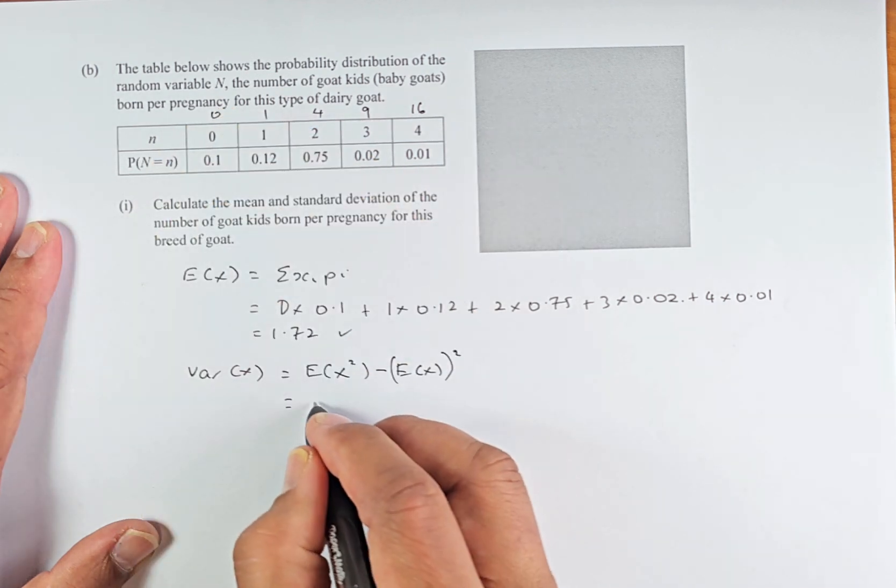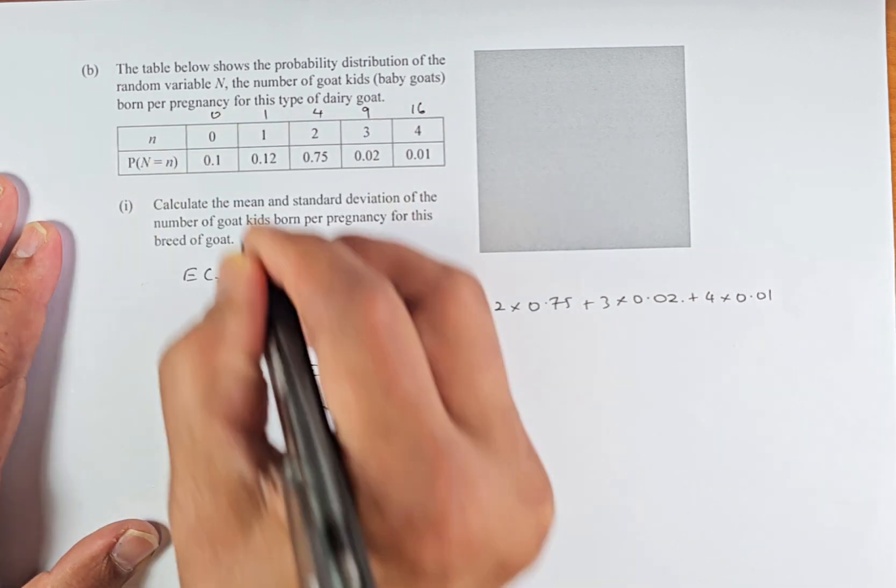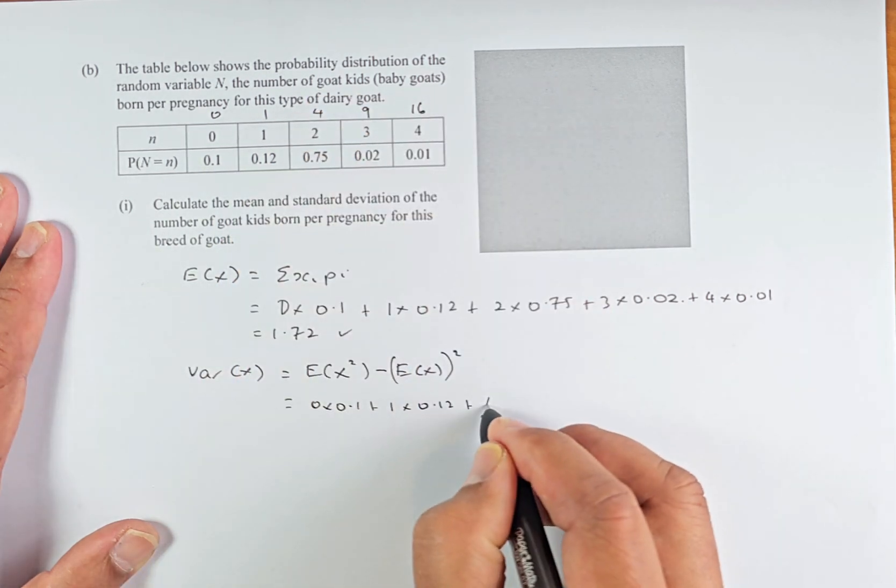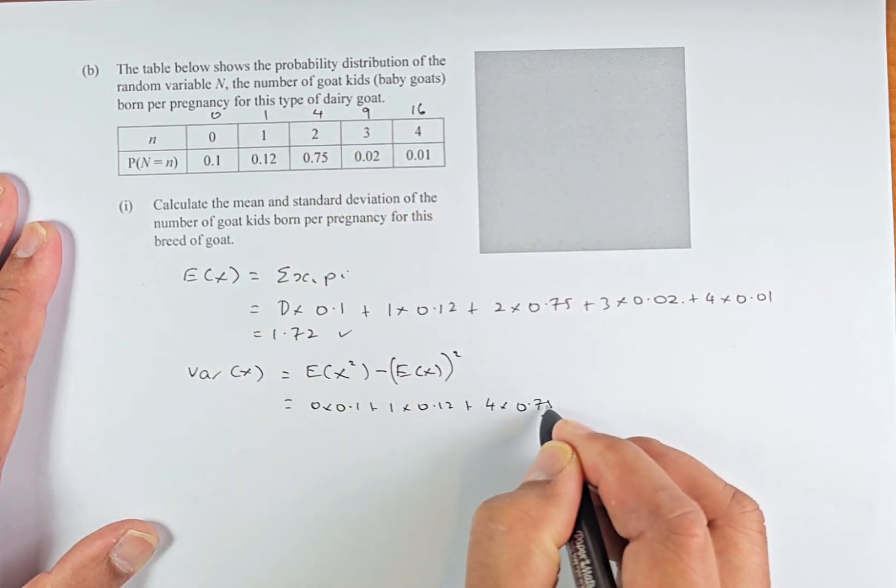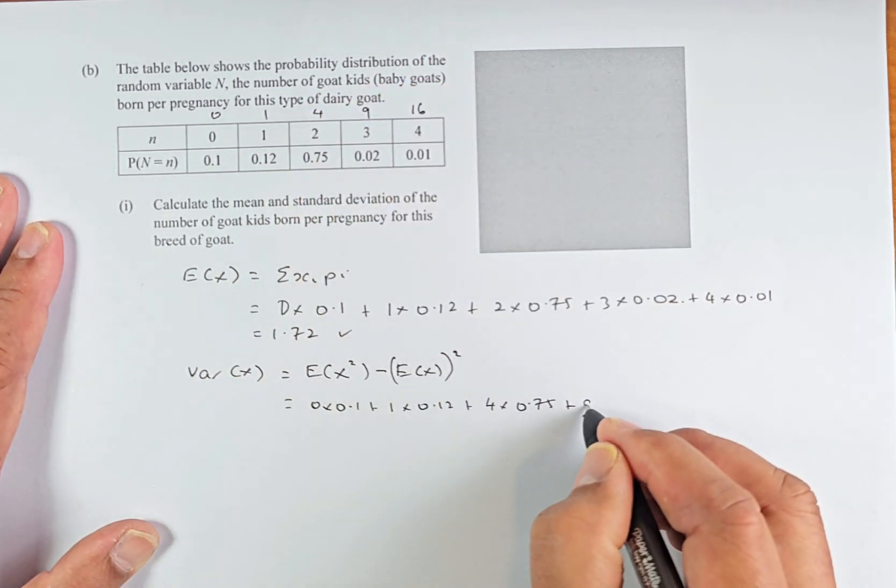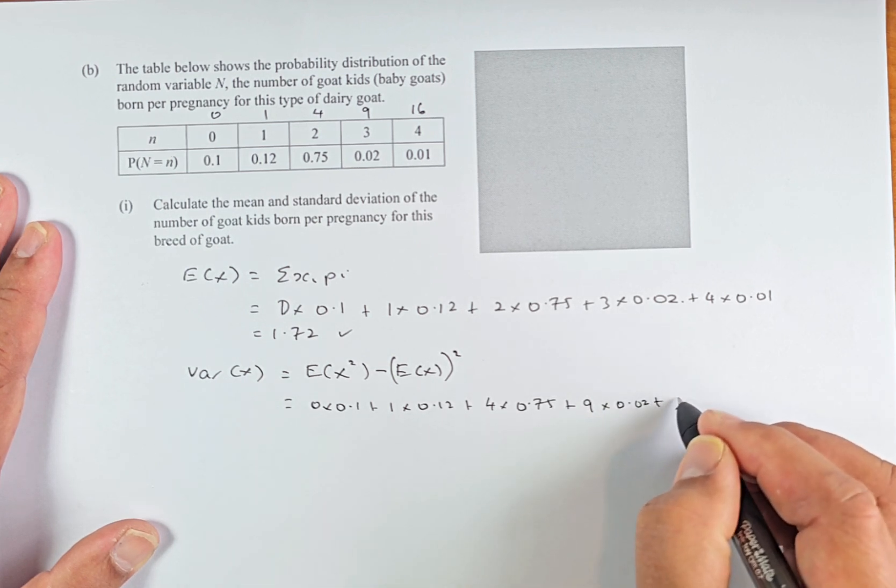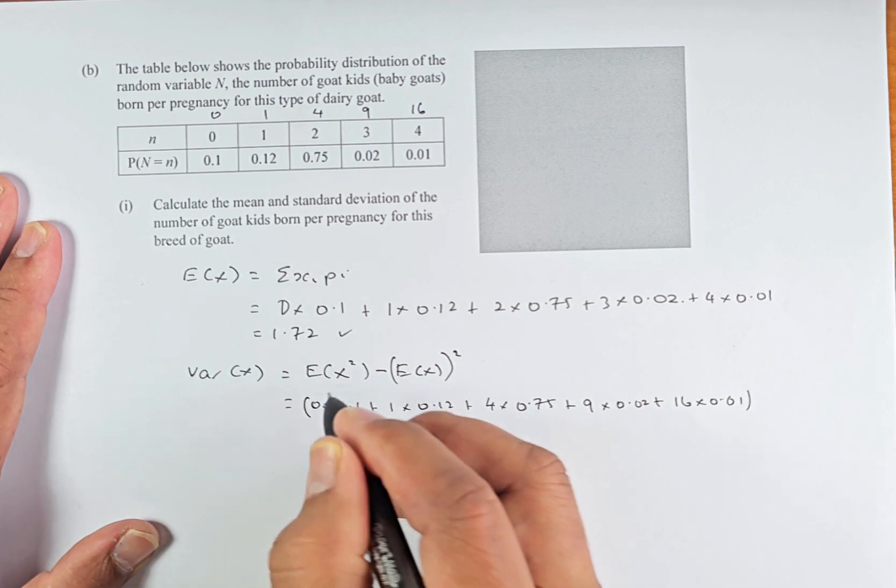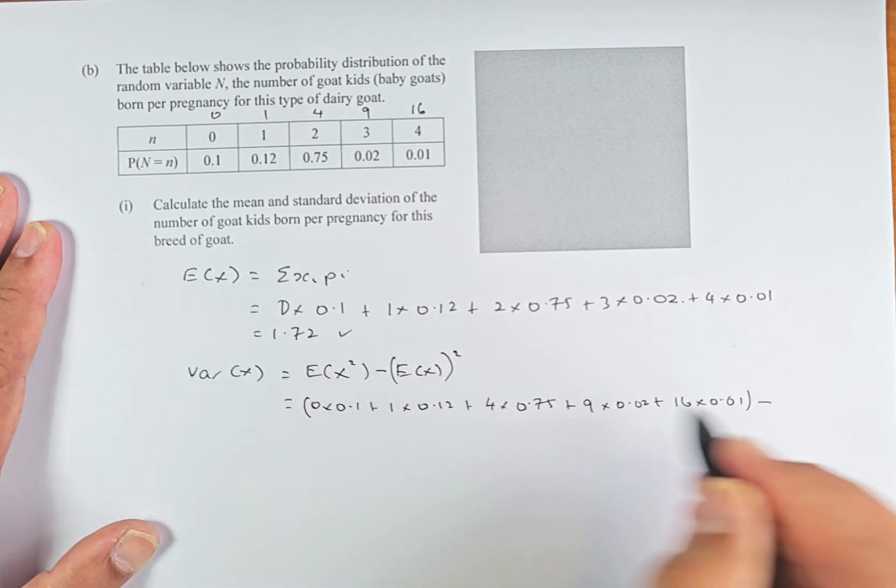You take the top number 0 times 0.1 plus 1 times 0.12 plus 4 times 0.75 plus 9 times 0.02 plus 16 times 0.01 and then that is the e x squared minus 1.72 squared.